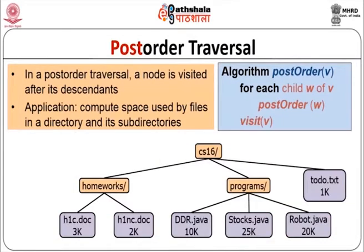Now go to post-order traversal. In post-order traversal, a node is visited after its descendants - you have to first visit the children before you visit the parent. Taking this example: you visit the leaves first, then both children, then their parent. You finish all the sub-trees of the root first, visiting all children and their sub-trees, and finally you visit the root node. This is post-order traversal.